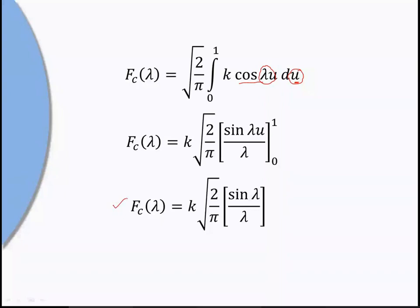Here only the Fourier transform is asked, not the Fourier integral representation, so this is the answer. To summarize: whenever it is not mentioned which transform — sine or cosine — check whether the function is even or odd. If even, use cosine transform; if odd, use sine transform.